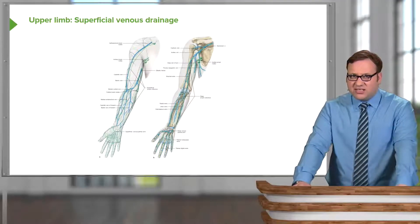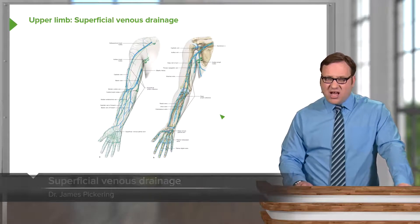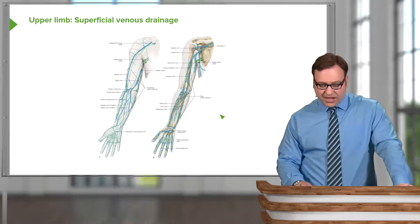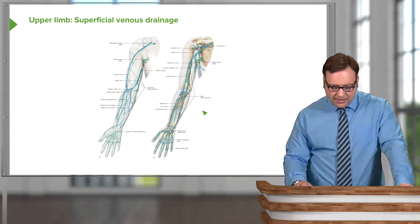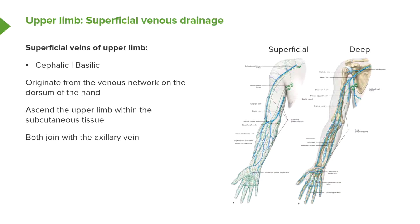Moving on to venous drainage, there are two important blood vessels that return venous blood to the heart from the upper limb. These are known as the cephalic and the basilic veins. We can see these on this anterior view of a right upper limb — the cephalic vein and the basilic vein.